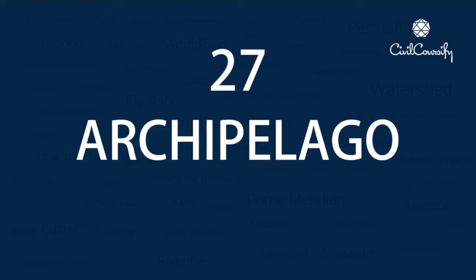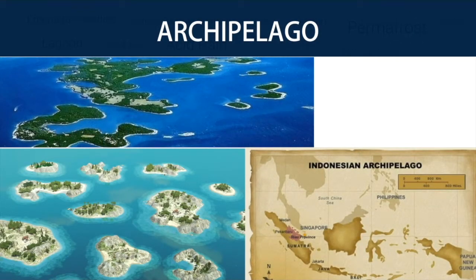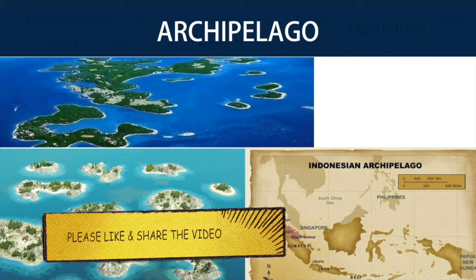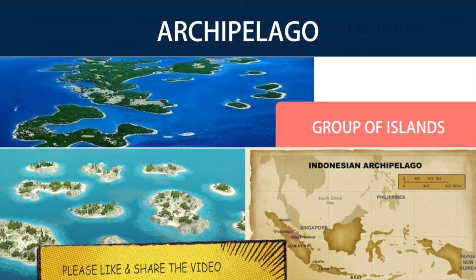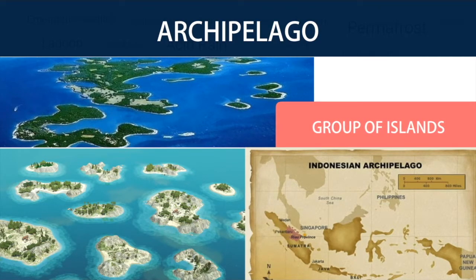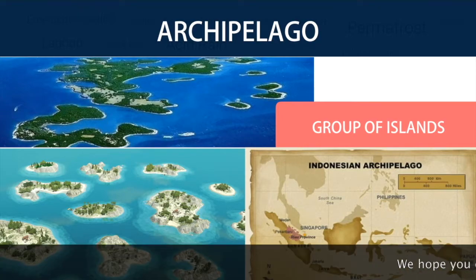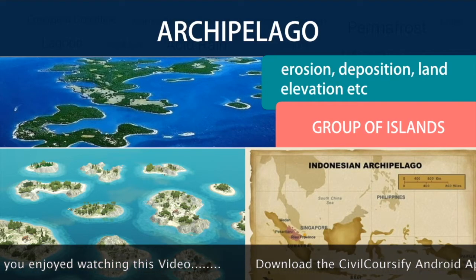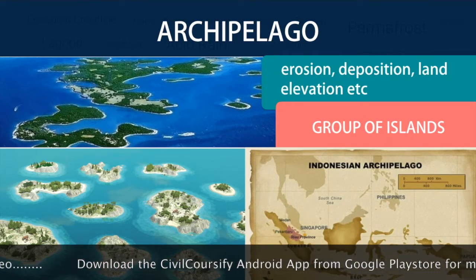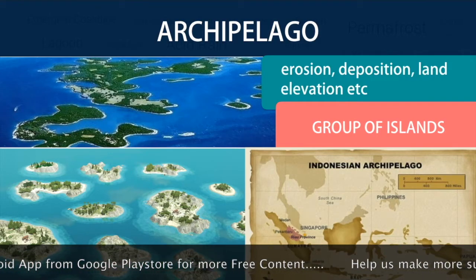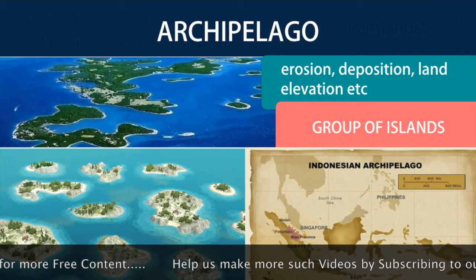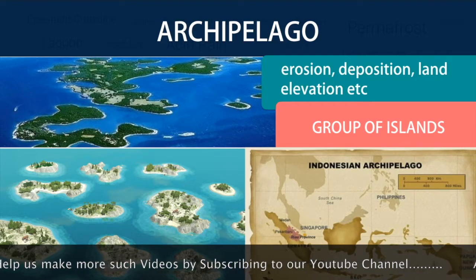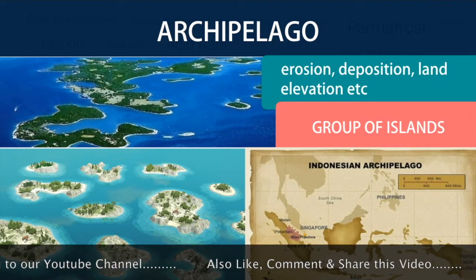Number 27: Archipelago. An archipelago, sometimes called an island group or island chain, is a chain, cluster, or collection of islands, or sometimes a sea containing a small number of scattered islands. Archipelagos are often volcanic, forming along island arcs generated by subduction zones or hotspots, but may also be the result of erosion, deposition, and land elevation. Some well-known examples are Indonesia, Japan, Taiwan, Philippines, New Zealand, Maldives, Bahamas, Greece, Hawaii, Polynesian Islands, and the Azores.